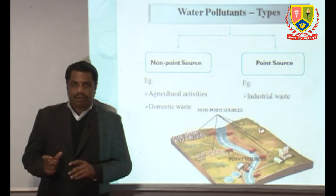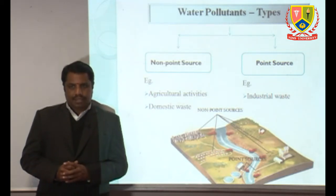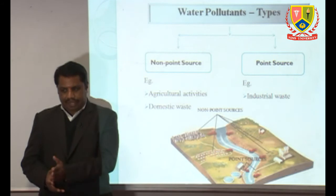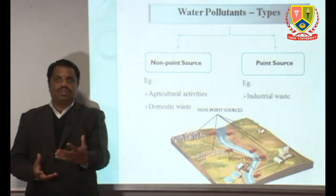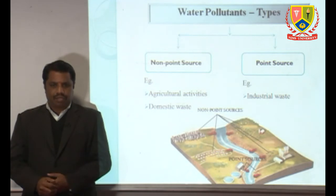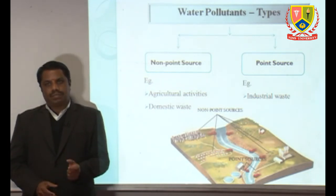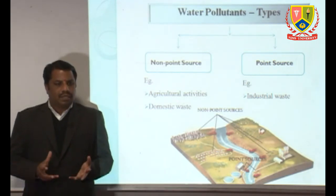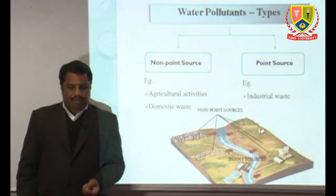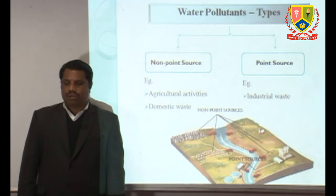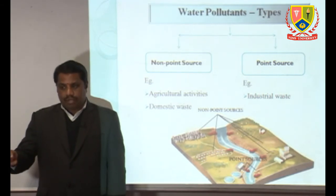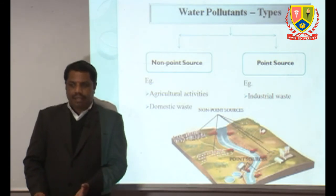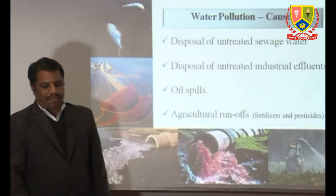Water pollution types include point source and non-point source. Point source means we can identify and measure the concentration of wastewater coming from an industry approximately. Non-point source comes from various places and cannot be easily quantified — for example, agricultural runoff and domestic wastewater, which vary throughout the day due to human and agricultural activities.